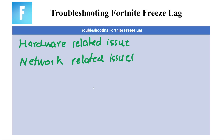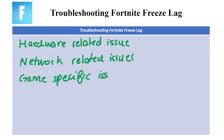The next type of issue that can be occurring is game-specific issues. First, verify game files — launch the Epic Games launcher and verify the integrity of your Fortnite game files; this can help identify and fix corrupted files. Then we have disable overlays — disable any overlays from other applications like Discord or Steam that might interfere with Fortnite's performance. Also, ensure you have the latest version of Fortnite installed, as updates often include performance improvements and bug fixes.